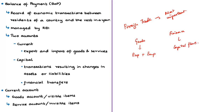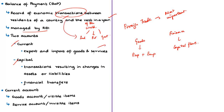BOP transactions can be made by individuals, private players, or government bodies. India's balance of payment account is managed by the Reserve Bank of India. The BOP account consists of two sub-accounts: capital account and current account. The current account includes all transactions relating to export and import of goods and services. The capital account records all transactions between residents of a country and the rest of the world in terms of assets or liabilities, making it concerned with financial transfers.